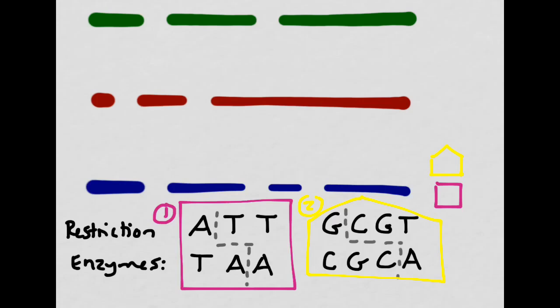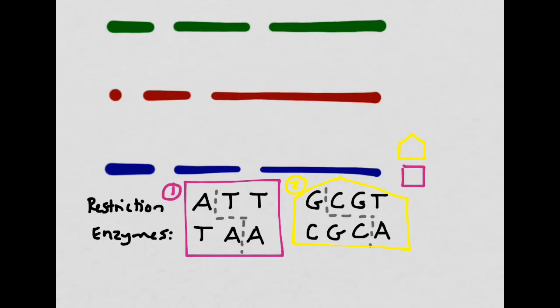But what if they weren't? What if you still had two that looked exactly the same? Is there another way to do this? The answer is yes. You could either add another restriction enzyme, or you could use something called radioactive tagging. To demonstrate the power of radioactive tagging in gel electrophoresis, we're going to go back to a scenario where the red molecule was cut differently than the green and the blue molecules.